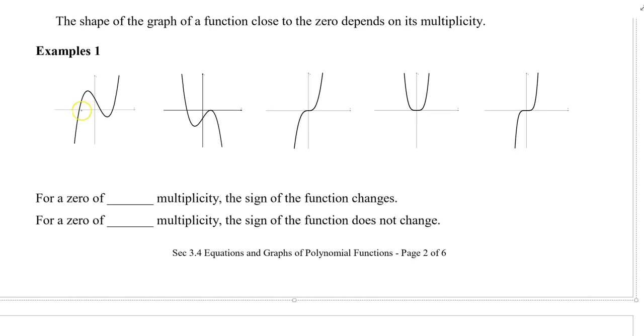In the first graph we have three zeros here and we can see they all just go straight through, so there's no kind of extra flat line or anything. We would say that all of these three zeros have a zero of multiplicity one.